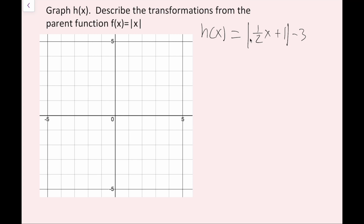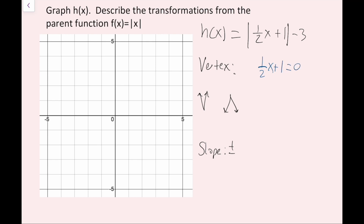Notice that now I have a coefficient on the inside of my absolute value rather than the outside. I'll show you what I think is the best and easiest way to do this. First, find the vertex, V or upside-down V, and then the slope. To find the vertex, set the entire expression inside the absolute value equal to zero: one half x plus 1 equals 0. Subtract 1, giving one half x equals negative 1. Multiply both sides by 2, so x equals negative 2. The x component of my vertex is negative 2, and the y component is always the number added to the absolute value expression — in this case, negative 3. So my vertex is (−2, −3).